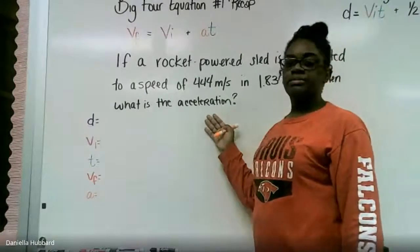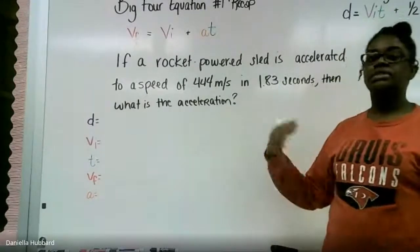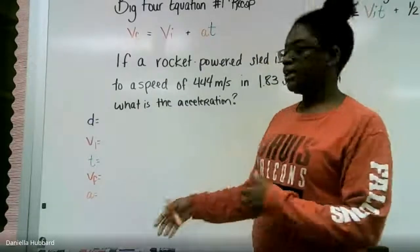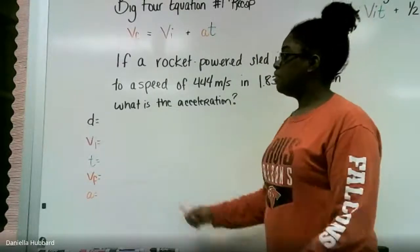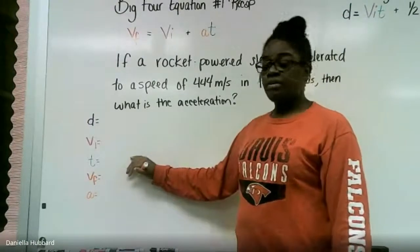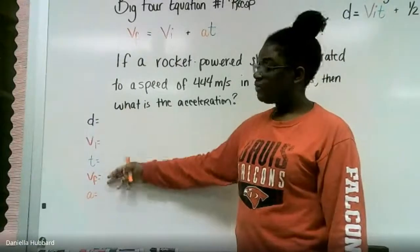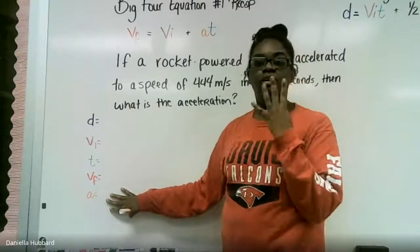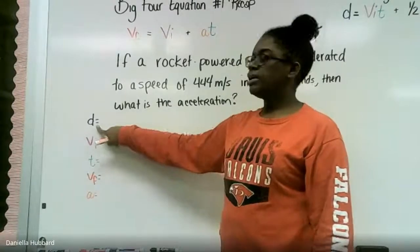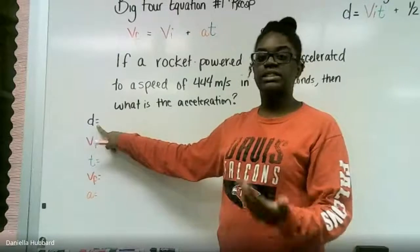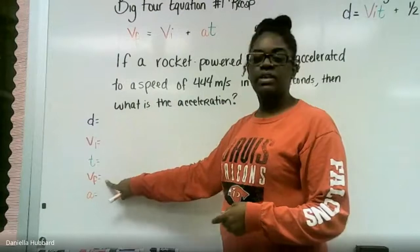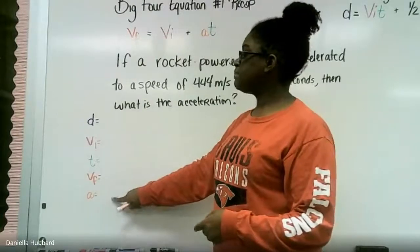So here's a practice problem that I have written out, because you will see a lot of word problems instead of just giving you the information and the variables. Also, if you haven't seen this strategy already, it will help you to write down these five variables that you will see with all four equations: distance (or height, which is the same thing), initial velocity, time, final velocity, and acceleration.